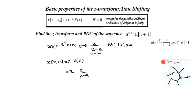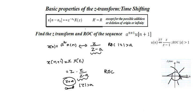The original signal X(N) has ROC modulus of Z greater than A, which can include infinity. But for X(N plus 1), we cannot consider Z equal to infinity because the result goes to infinity due to the Z factor. Therefore the ROC of A raised to N plus 1 times U(N plus 1) is modulus of Z greater than A and less than infinity.